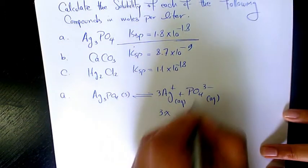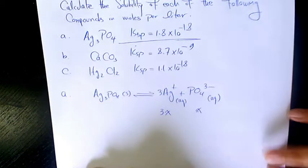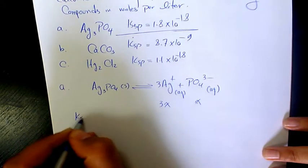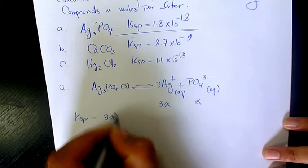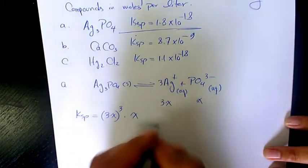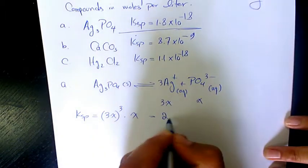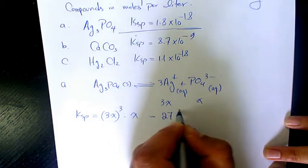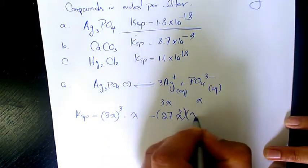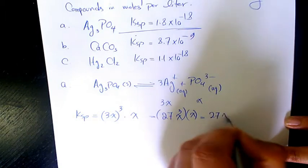That's going to be 3X. Here's going to be X. So KSP will be 3X to the power of 3 times X to the power of 1, which makes it 27X to the power of 3 times X, which is 27X to the power of 4.